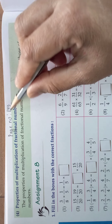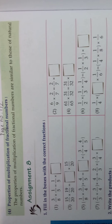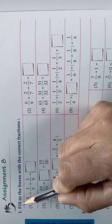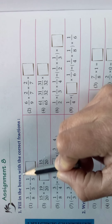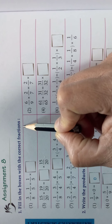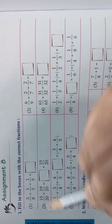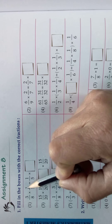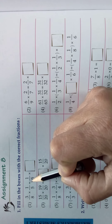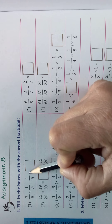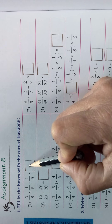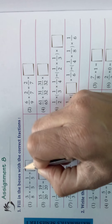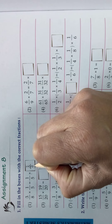This is on page number 172. Take your textbook, Assignment 8. First, fill in the boxes with the correct fractions. Look here — take the first one: 3/8 × 1/5 is equal to 1/5 × what? The number 3/8.